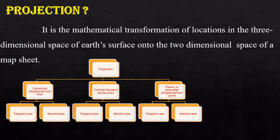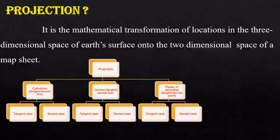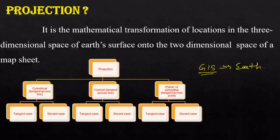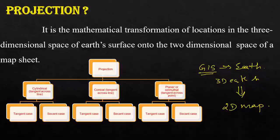What is projection? You have already studied projection in your engineering graphics, so you know how to project and draw models of elements we come across in day-to-day life. Projection is the mathematical transformation of locations in the three-dimensional space of earth's surface onto the two-dimensional space of a map sheet. Our geographic information system deals with earth, so we convert the three-dimensional earth's surface into a two-dimensional map — that is called projection.